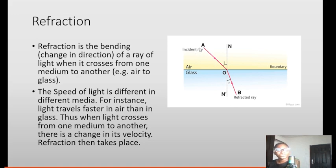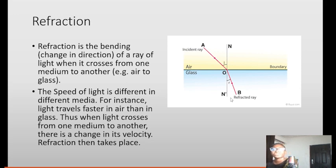Look at it now. The light ray was traveling from air, but once it entered glass there is a change in direction. If this angle was 30°, the other one is automatically lesser than 30°. There is a bending.